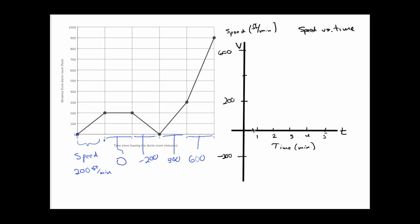So over the first minute, his speed was always 200 feet per minute. So I'm going to draw a horizontal line, make this a little bit thicker so it will stand out. A horizontal line from zero to one. His speed neither goes up nor goes down during this one-minute period. It is constantly fixed at 200 feet per minute.